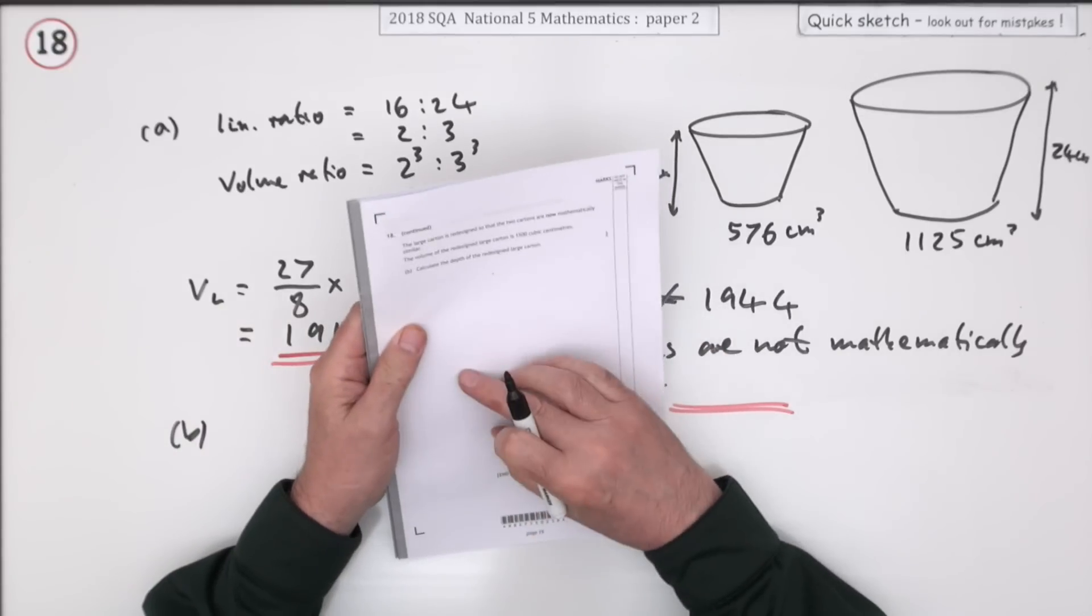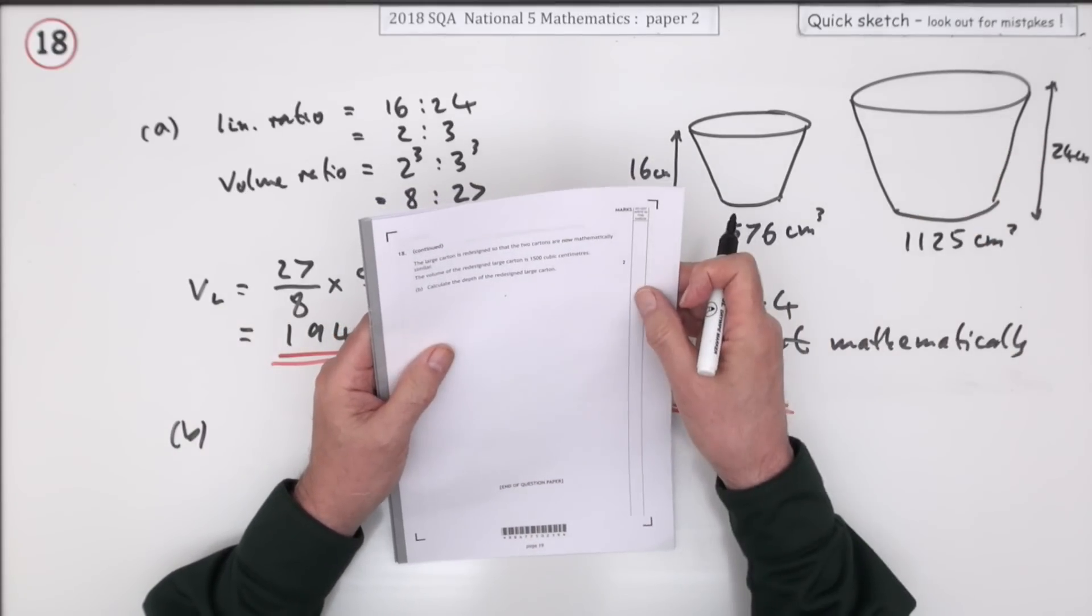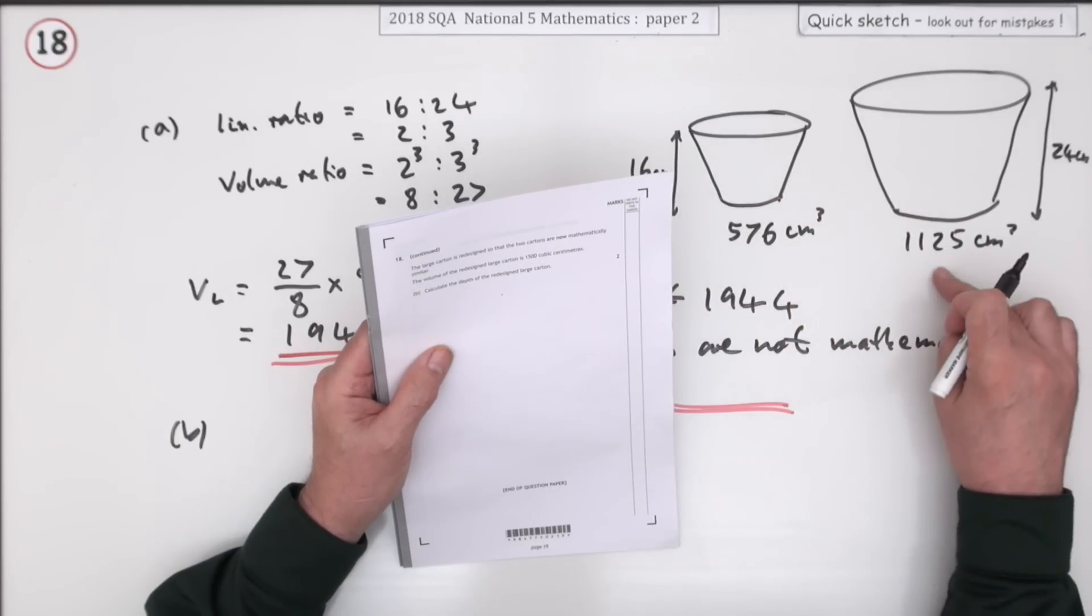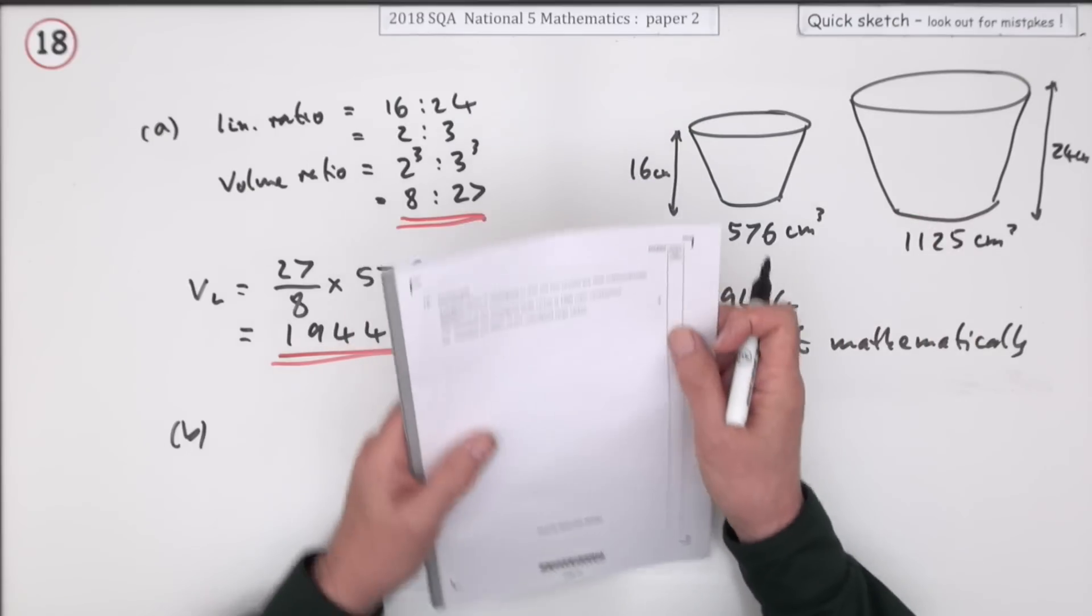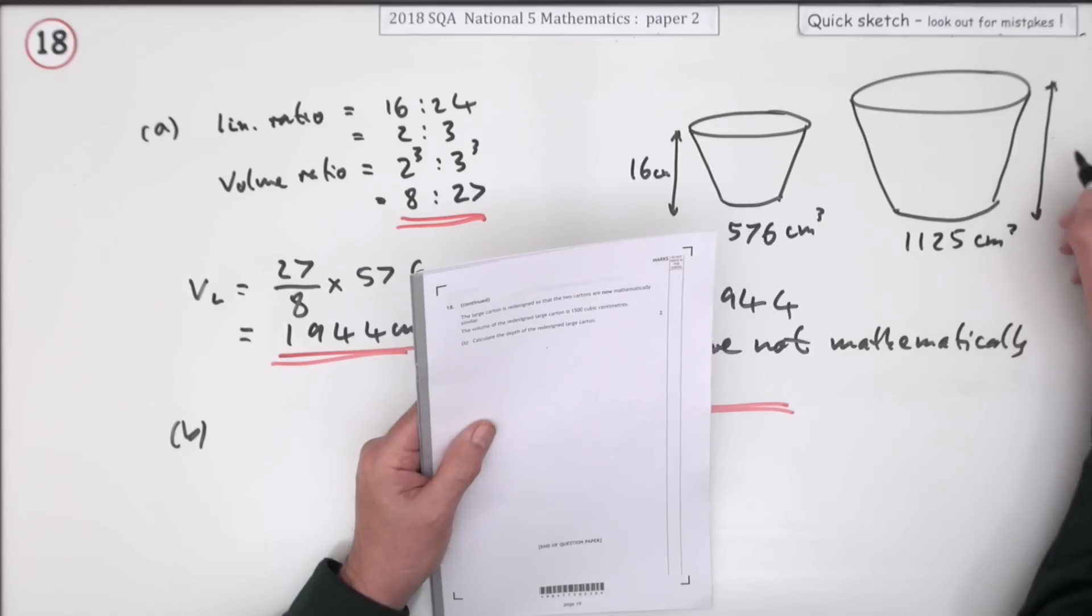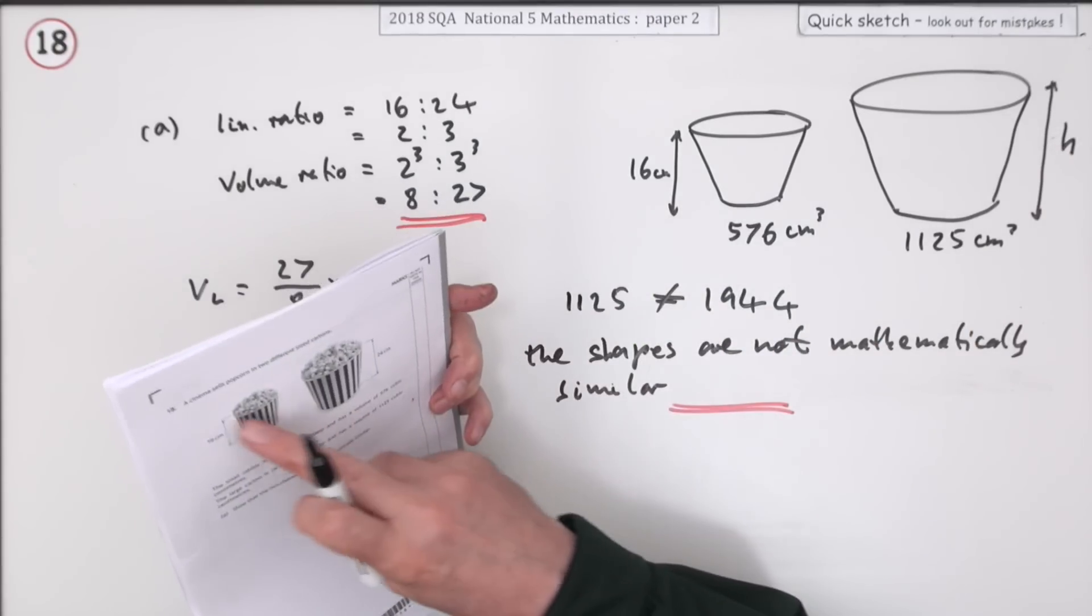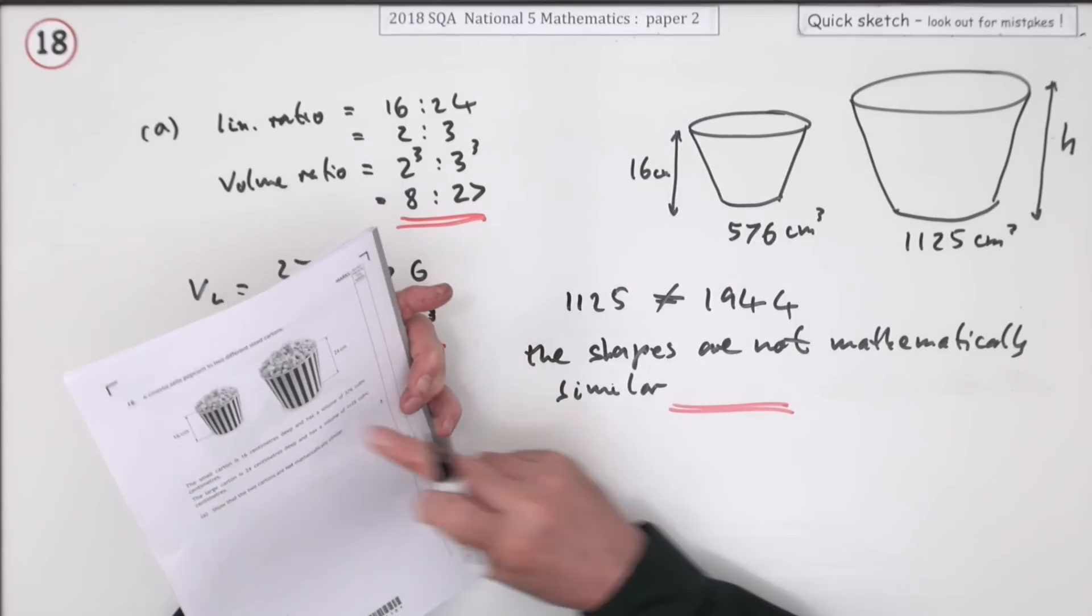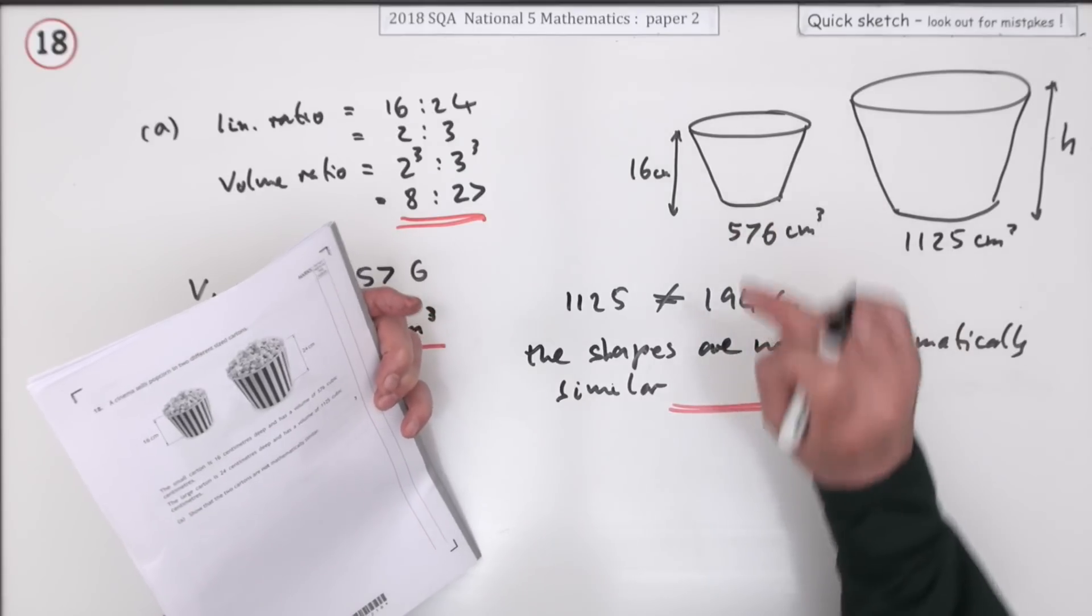Part B: for two marks, the large carton is redesigned so the cartons are now mathematically similar. This one is now 1500 cubic centimeters. If that's the case, what's the height of the redesigned one? A cinema sells popcorn—who buys their popcorn in a cinema? They must be mad.